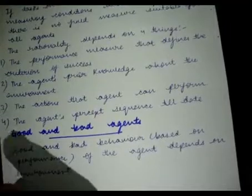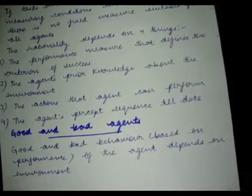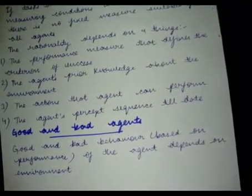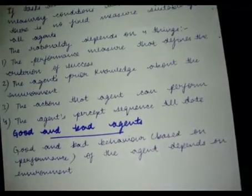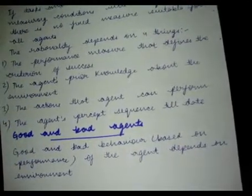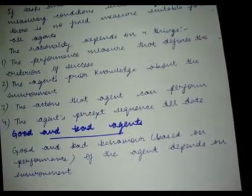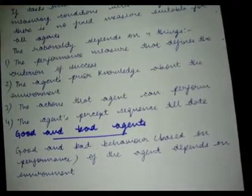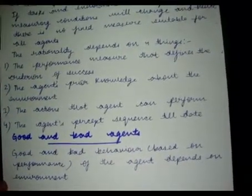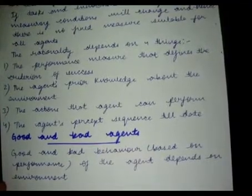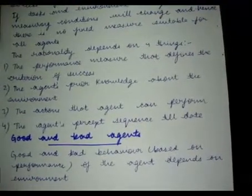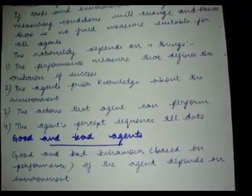If an environment is completely known, we get good agent behavior; if the environment is unknown, we might get bad behavior. Good and bad here means nothing but rational and irrational behavior. Rational behavior is obtained when the agent has complete or very good knowledge about its environment — only then can it take accurate and proper decisions. So good and bad agents are distinguished by the agent's knowledge of its environment.